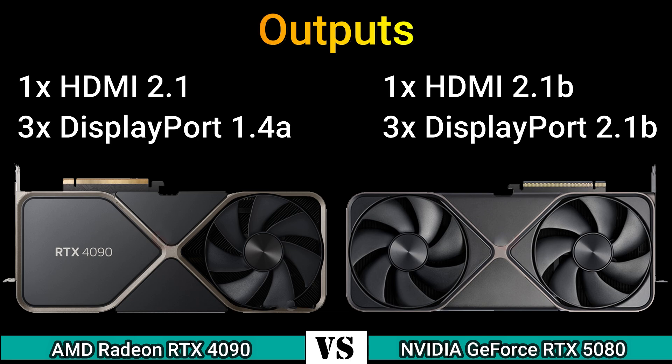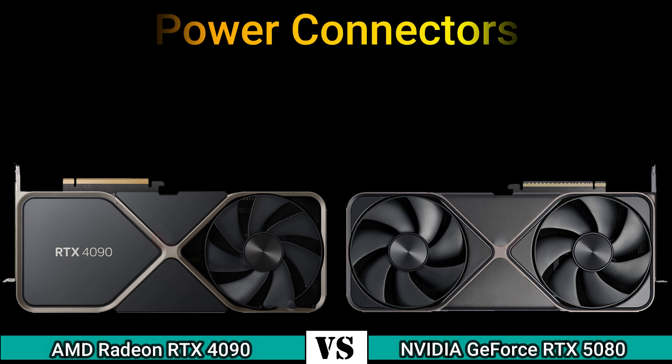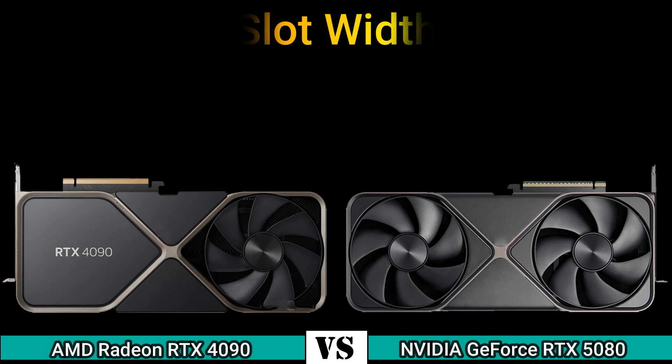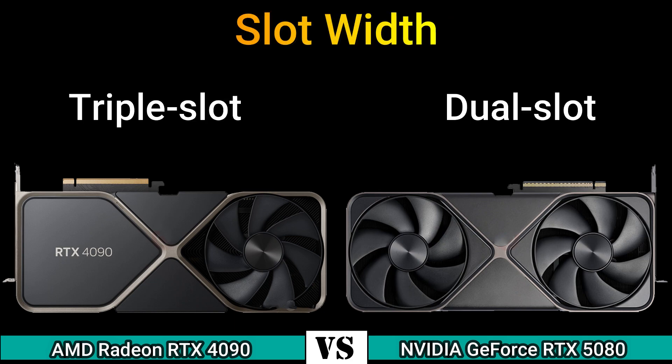Outputs: 1x HDMI 2.1 and 3x DisplayPort 1.4A on one card, and 1x HDMI 2.1b and 3x DisplayPort 2.1b on the other. Power connectors: 1x 16-pin. Slot width: triple slot and dual slot.